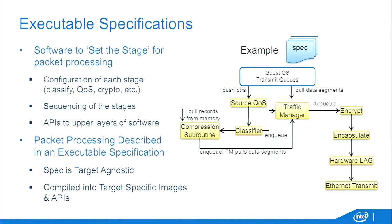What you end up with is an executable specification. We want to start with a specification that we can run and test out and drive all the bugs out before we go and optimize it. This follows very nicely with the P4 flow — we configure each of these stages that we're putting into our data plane.